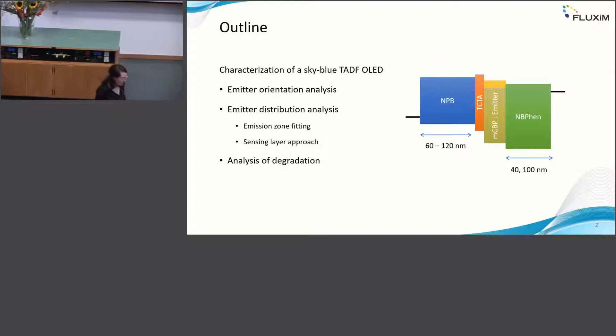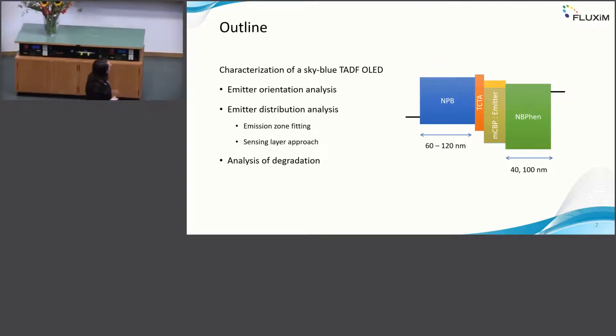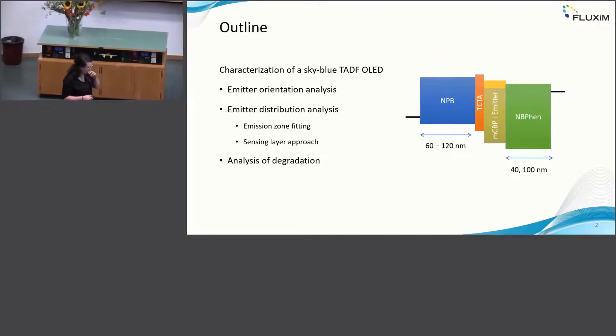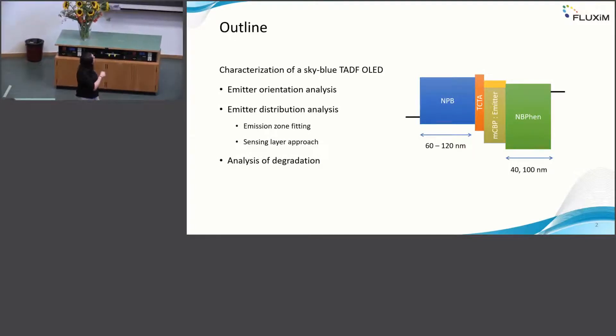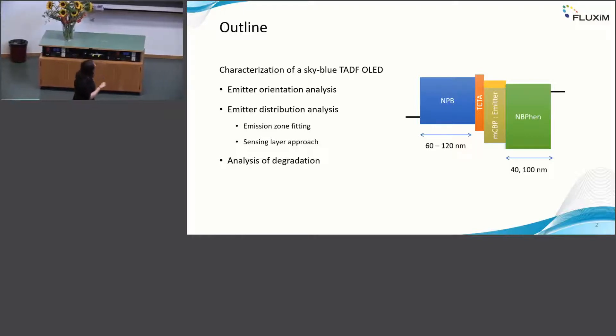The talk is split in two parts. First, I'll talk about device properties at state zero. I will look at the emitter orientation and the emitter distribution, also compare it with sensing layer experiments. In the second part, I will talk about the degradation that we analyzed with PIOS.